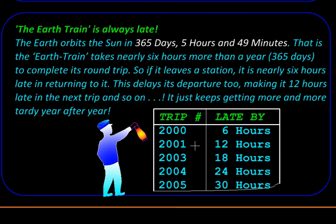In year 2001, the Earth will be late by 12 hours. In 2002 it will be late by 18 hours, then 24 hours, 30 hours, and so on. This tardiness keeps on getting accumulated year after year.